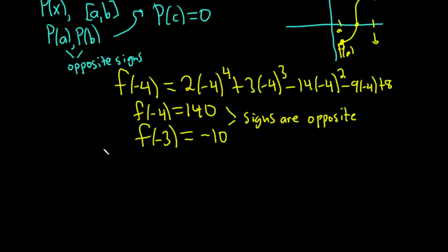So signs are opposite. Therefore, there is at least one c, one value of c in our interval.